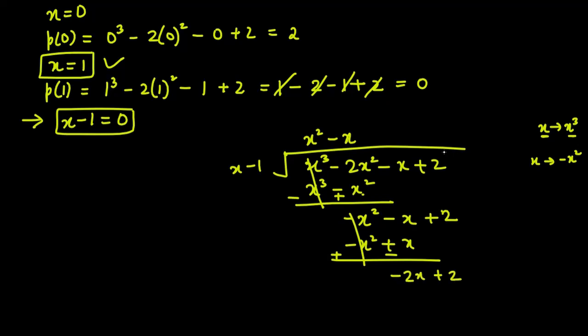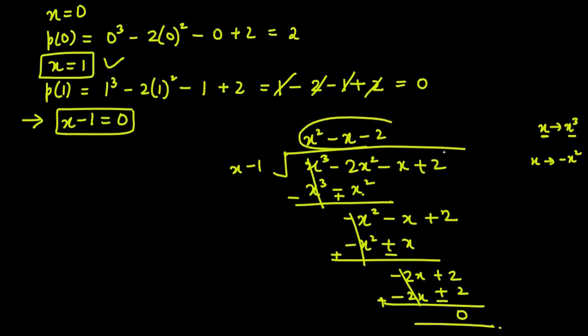Bring down plus 2. Now to convert x into minus 2x, multiply by minus 2. So minus 2x plus 2. After sign change: minus 2x cancels with 2x, and 2 minus 2 gives 0. So we have a new polynomial: x square minus x minus 2, which is a quadratic type. From a quadratic polynomial we can get 2 factors using middle term splitting.